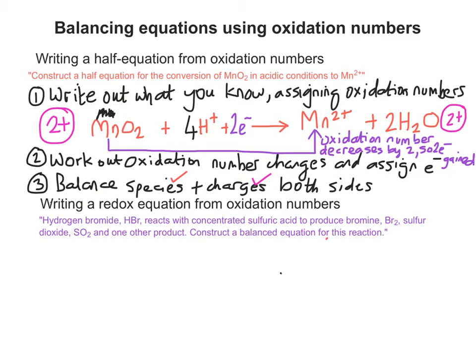So this one says, hydrogen bromide HBr reacts with concentrated sulfuric acid to produce bromine Br2, sulfur dioxide SO2, and one other product. And I've just realised I forgot to put H2SO4 in. Sorry about that. They probably would give you H2SO4 in the question. So let's write out what we know first of all.